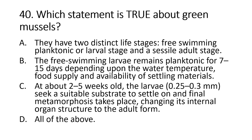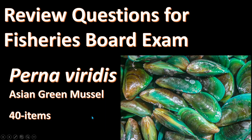Number 40. Which statement is true about green mussels? A. They have two distinct life stages: free-swimming planktonic or larval stage and sessile adult stage. B. The free-swimming larvae remains planktonic for 7 to 15 days depending upon the water temperature, food supply, and availability of settling materials. C. At about 2 to 5 weeks old, the larvae, 0.25 to 0.3 millimeters, seek a suitable substrate to settle on and final metamorphosis takes place, changing its internal organ structure to the adult form. D. All of the above. The answer is letter D, all of the above. That's all for now, thanks for watching.